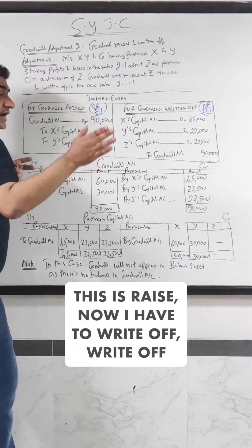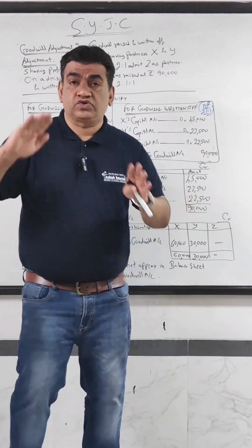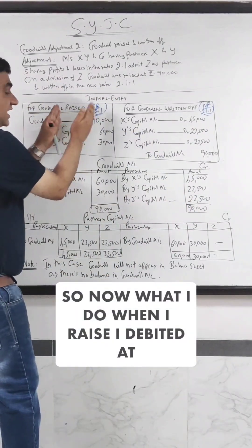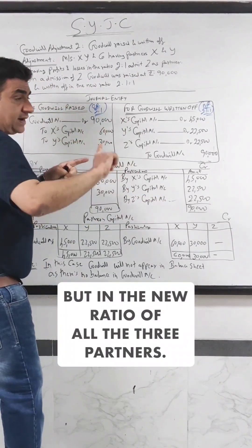Now I have to write off. Write off means goodwill raised should be out of the books of account. So now what I will do, when I raise I debited goodwill, now I will credit goodwill but in the new ratio of all the three partners.